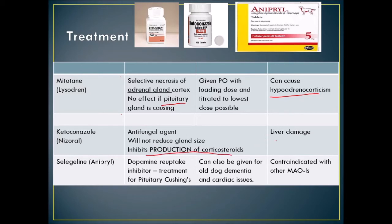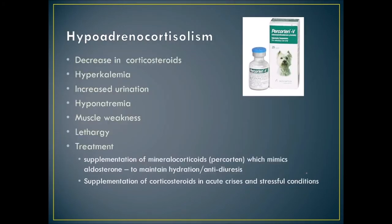Hypoadrenocorticism is Addison's disease — too little hormone. It involves not only too little corticosteroids but also too little of the mineralocorticoid aldosterone. Without aldosterone, the body cannot maintain water and electrolyte balance, leading to excessive urination of electrolytes and water, decreasing the ability to maintain homeostasis.